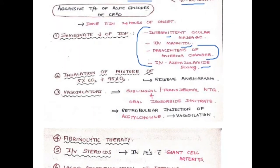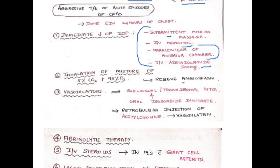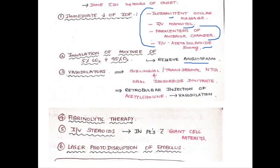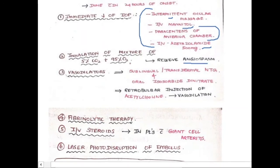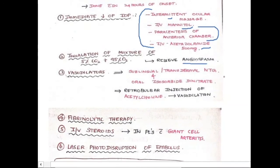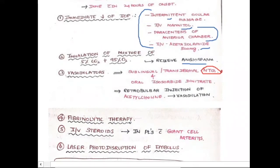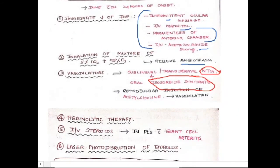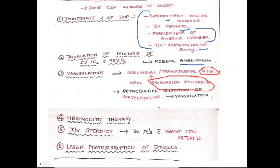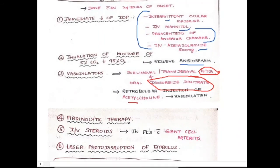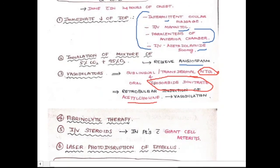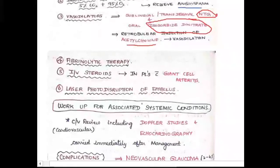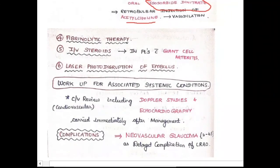Inhalation of a mixture of 5% carbon dioxide and 95% oxygen is given to reduce angiospasm. Vasodilators can also be given: nitroglycerin — sublingually or transdermally — isosorbide dinitrate orally, and retrobulbar injection of acetylcholine, all of which cause vasodilation.